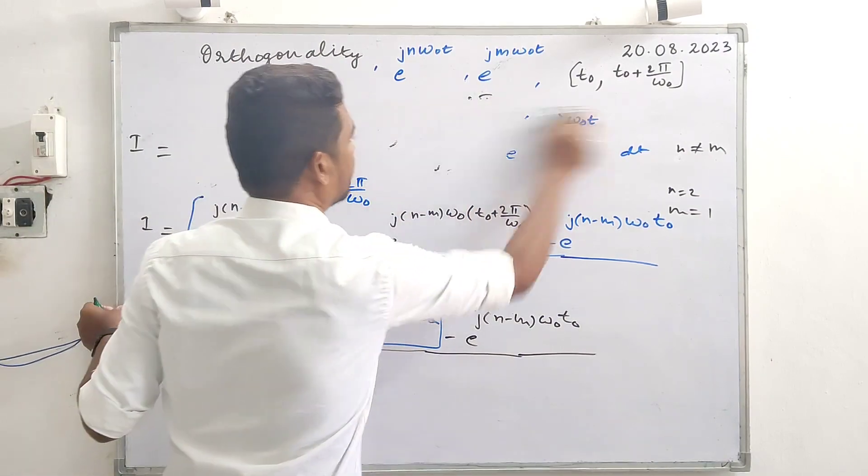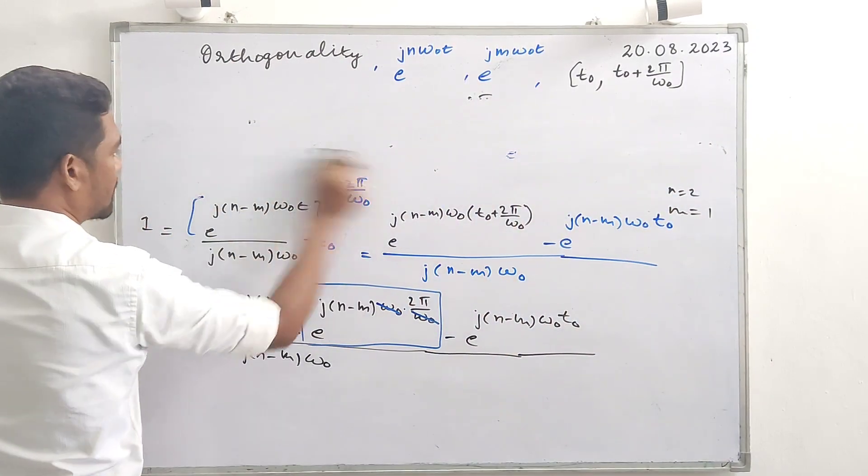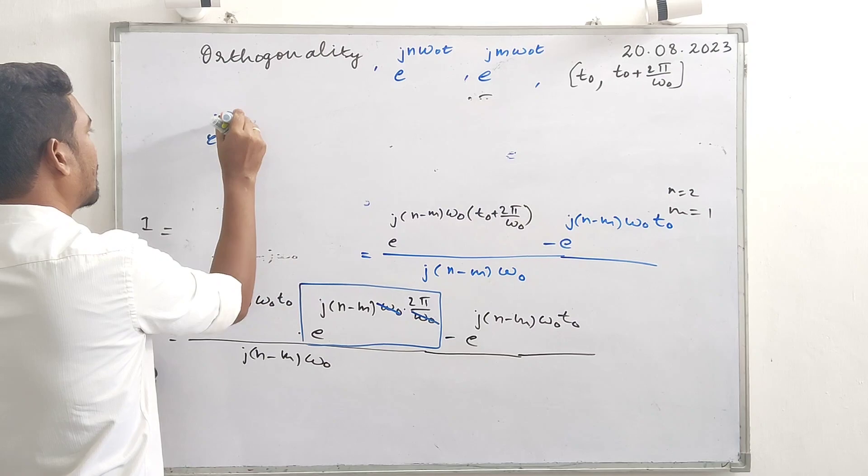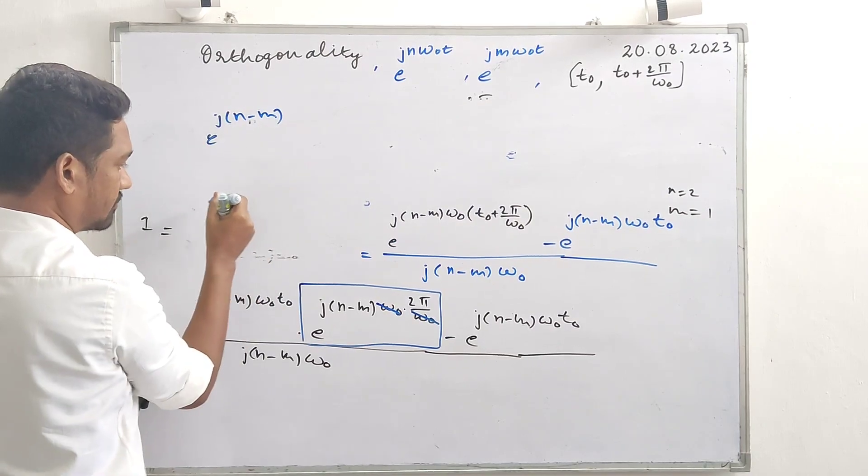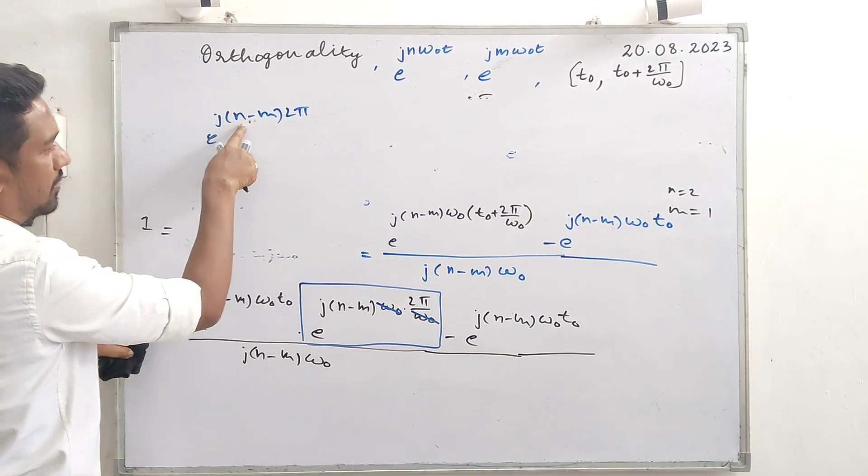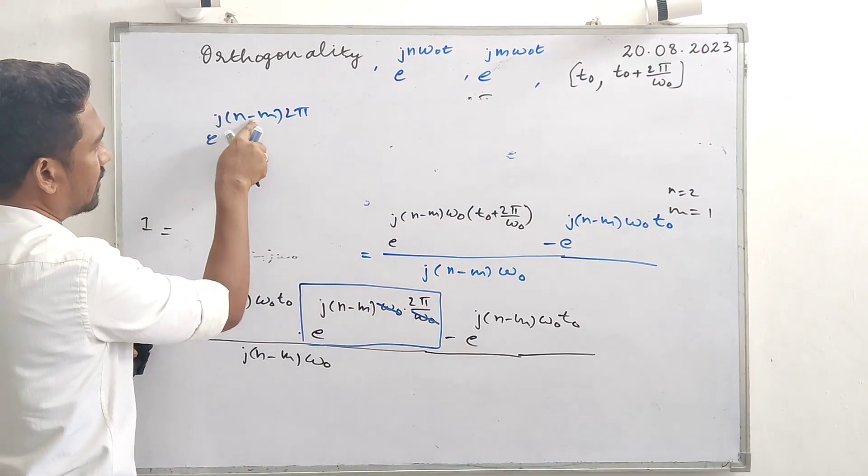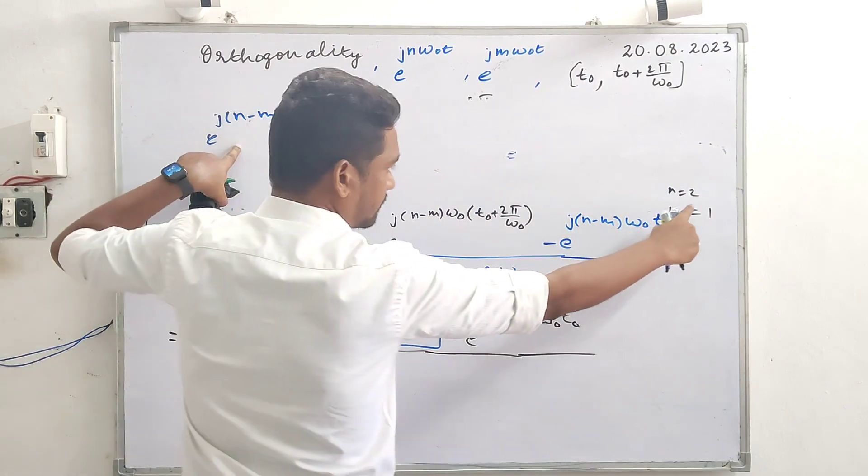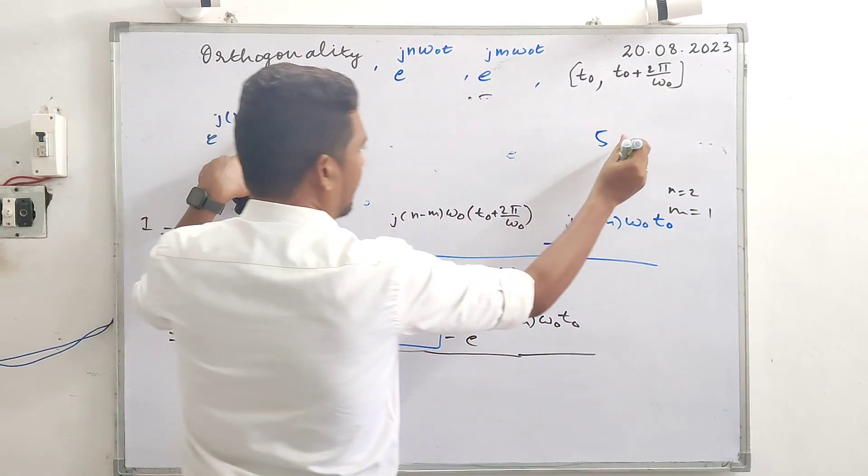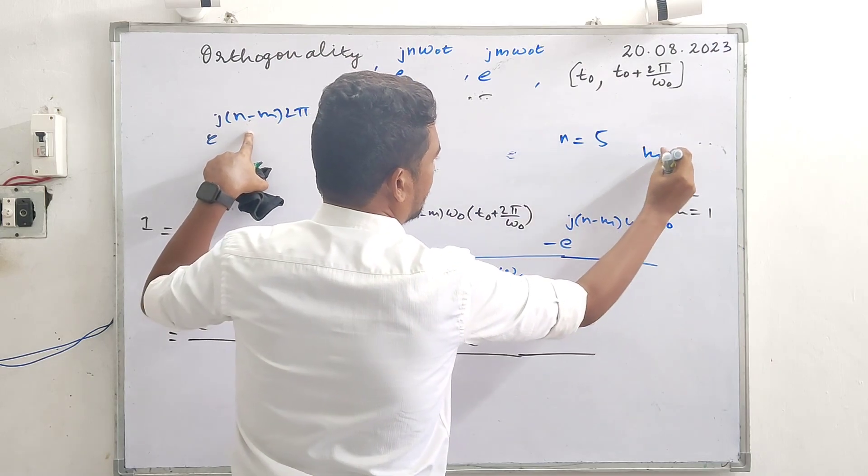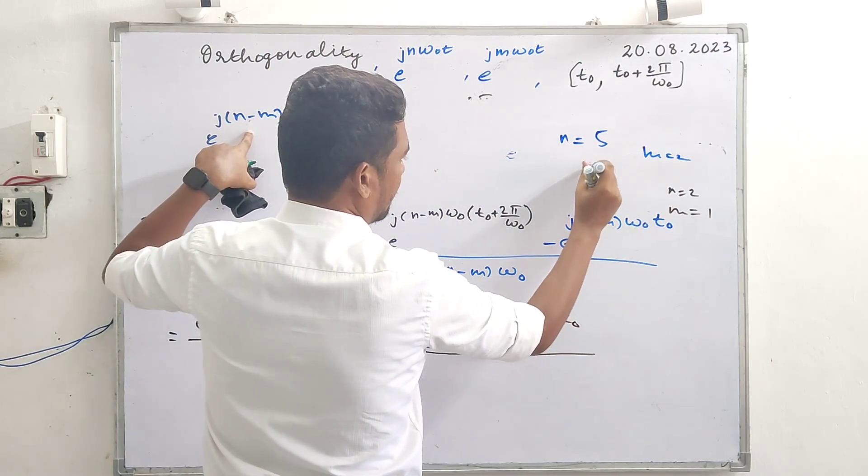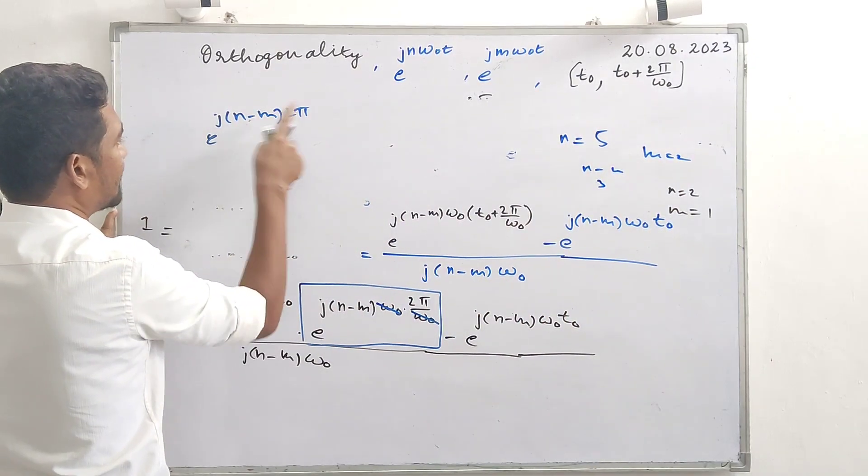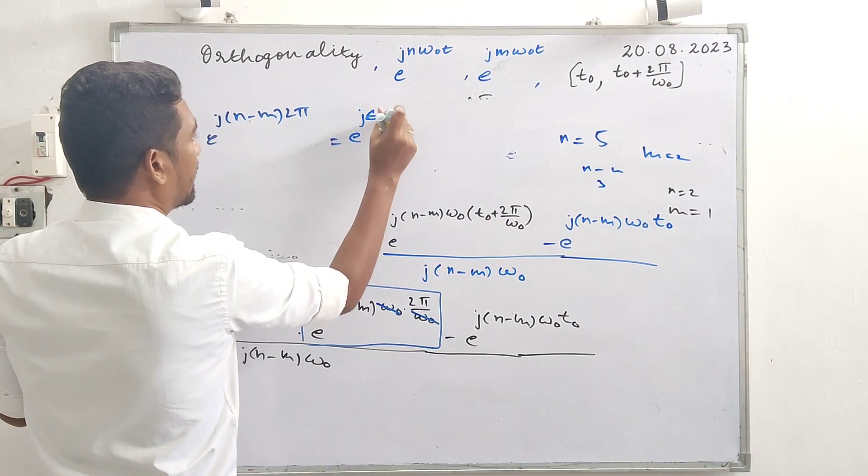This term is the game changer: e rise to j n minus m 2 pi. Any value, any integer value of n minus m, any integer value - it may be 5 or even negative 5. Let it be n equal to 5, m equal to 2, so n minus m will be 3. Plug in 3: 3 times 2 is 6, so e rise to j 6 pi.